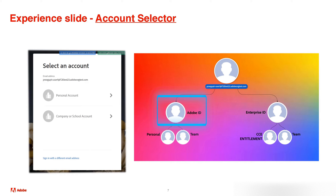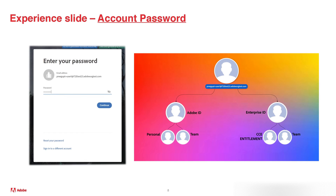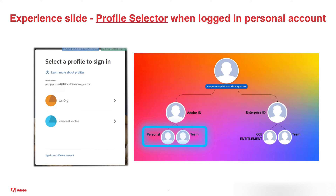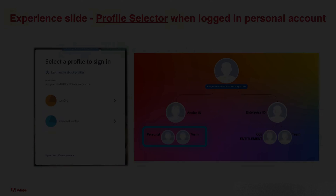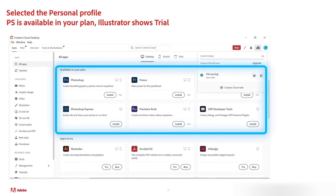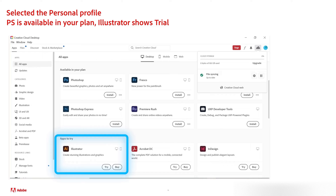Let's say the user selects personal account. Upon selecting personal account, the user is prompted to enter their password and then clicks continue. After entering their password, the user is presented with a profile selection. Since the user's Adobe ID or personal entitlement has been invited to a team giving them a team entitlement, they are presented the option to select either their personal profile or their team entitlement, here represented as test org. If the user selects their personal profile, within Creative Cloud Desktop they see the applications purchased as available in your plan — Photoshop, Presco, Photoshop Express, etc. Note: although the team has given this user a license to Illustrator, Illustrator is not listed as available in your plan when logged into the personal profile — it appears only as apps to try.